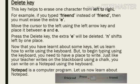Our last special key is the delete key. This key helps to erase one character from left to right. For example, if you typed 'friende' instead of 'friend', you must erase the extra E. Move the cursor to the left using the left arrow key and press it between the two E's, then press the delete key. The extra E will be deleted and the text will shift left by one place.